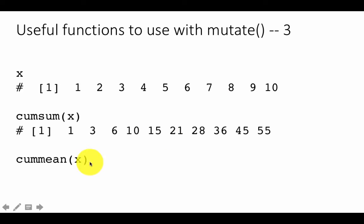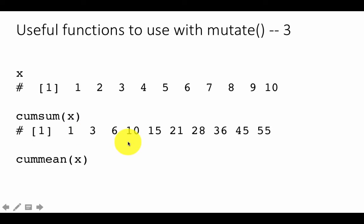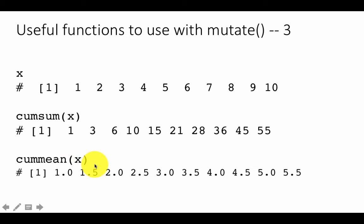Similarly, there is also a cumulative mean. The cumulative mean for the first element is 1. For the second element, the cumulative sum is 3 with 2 elements, so the cumulative mean is 1.5. Then you get 1.0, 1.5, and 6 divided by 3 is 2, and 55 divided by 10 is 5. That is how the cumulative mean function works.